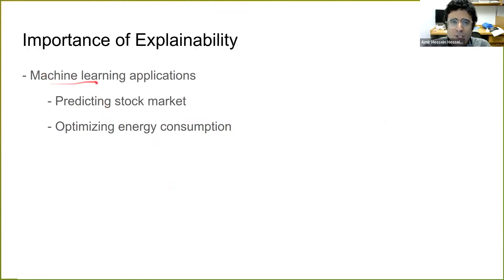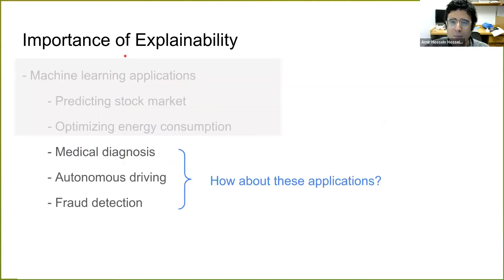Machine learning has many applications in predicting stock markets or optimizing energy consumption. In such applications, explainability is not so important. But how about applications like medical diagnosis, autonomous driving, or fraud detection? In these applications, the capability of machine learning can't be unleashed without explainability.